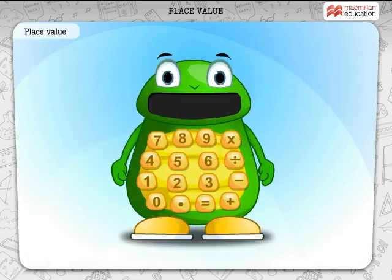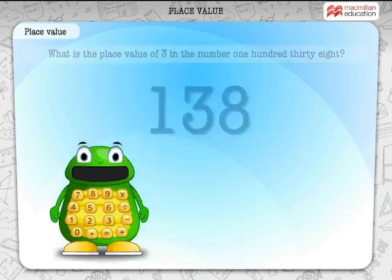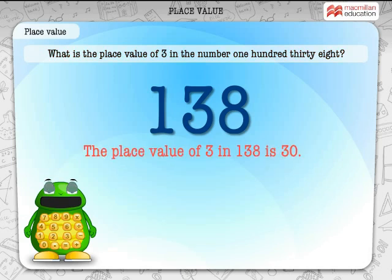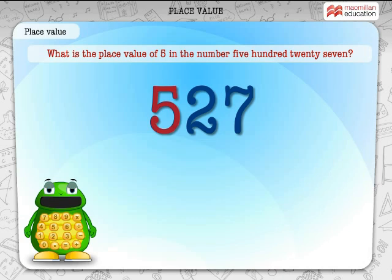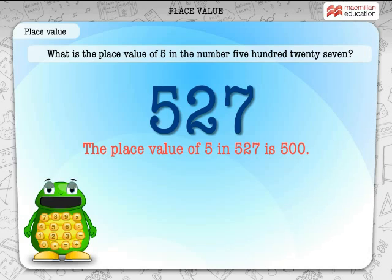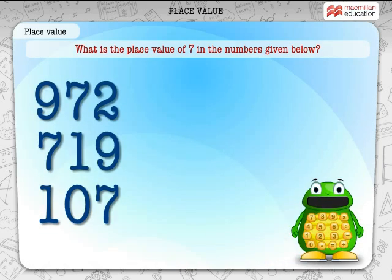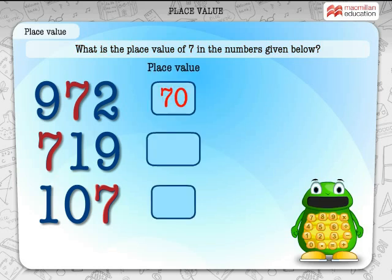Well done. You are doing very well so far. Now, spot the place values of these numerals. What is the place value of 3 in the number 138? The place value of 3 in 138 is 30. What is the place value of 5 in the number 527? The place value of 5 in 527 is 500. What is the place value of 1 in the number 841? The place value of 1 in 841 is 1. What is the place value of 7 in the numbers given below? 70, 700, and 7.